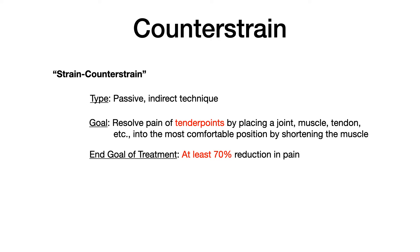The end goal of your treatment when using counterstrain is at least a 70% reduction in pain — that's very high yield. So what you want to know about counterstrain so far is that it's passive indirect, it treats tender points, and it's not effective unless it's resolving at least 70% of a patient's pain.